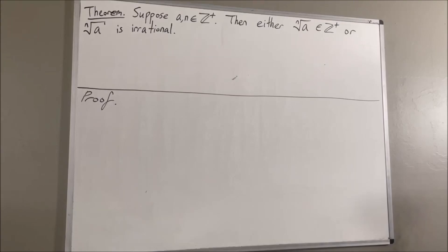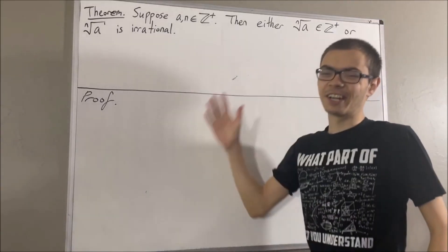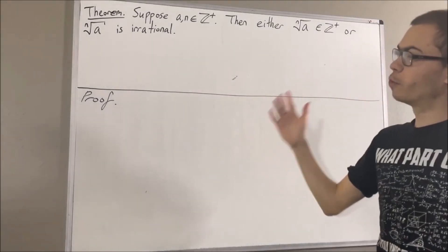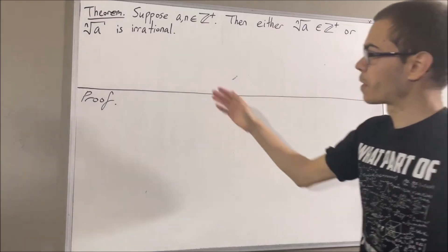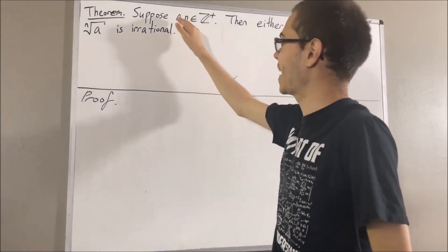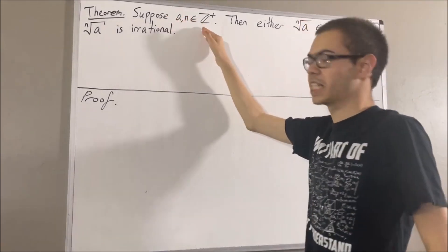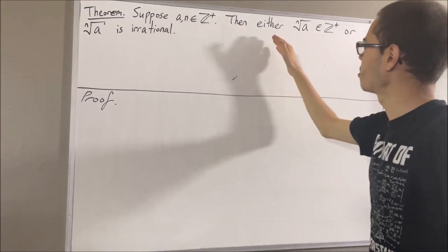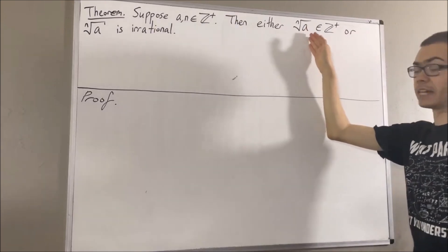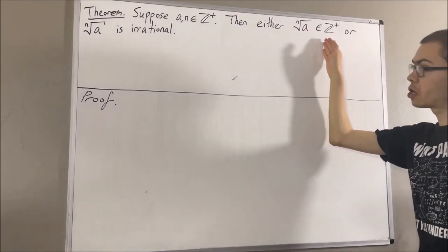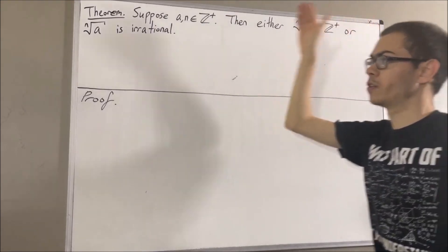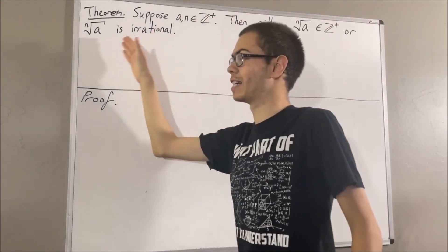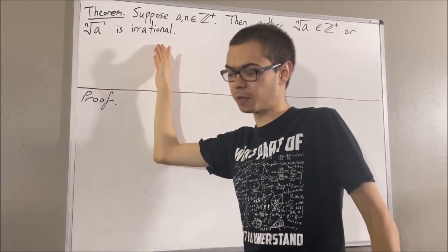Hello! In this video, we are going to prove the following theorem. Suppose a and n are positive integers. Then either the n-th root of a is a positive integer, or the n-th root of a is irrational.